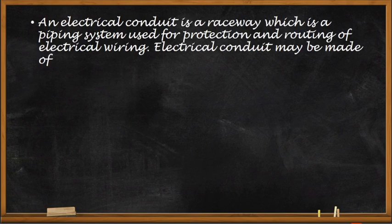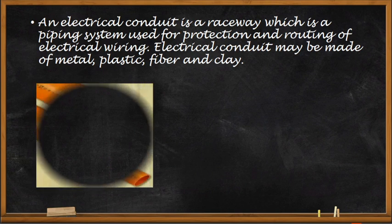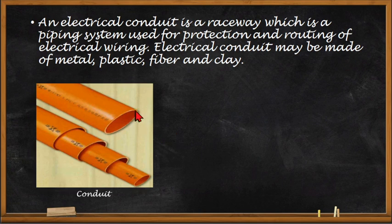An electrical conduit is a raceway which is a piping system used for protection and routing of electrical wiring. Electrical conduit may be made of metal, plastic, fiber, or clay. An electrical conduit is a raceway, but its main difference from the conventional raceway is that it is a piping system — it has a round diameter — that's why it is called a conduit. This is an example of a conduit.